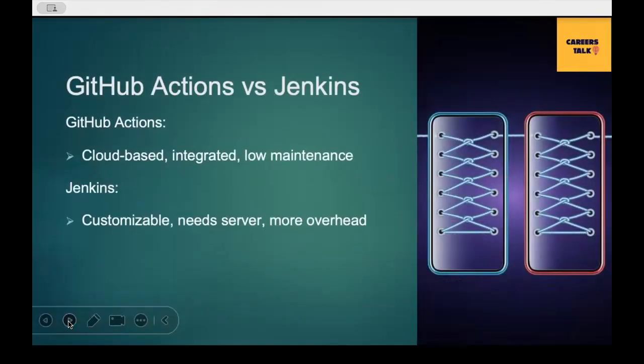Many teams ask: should we use Jenkins or GitHub Actions? GitHub Actions is cloud-based, easy to set up, and has less maintenance — ideal for teams already using GitHub. Jenkins is highly customizable but requires server maintenance: more control, but more overhead. Most modern teams prefer GitHub Actions because it's tightly integrated and minimizes maintenance burden.